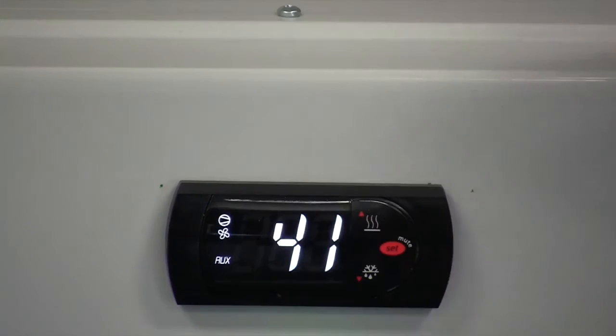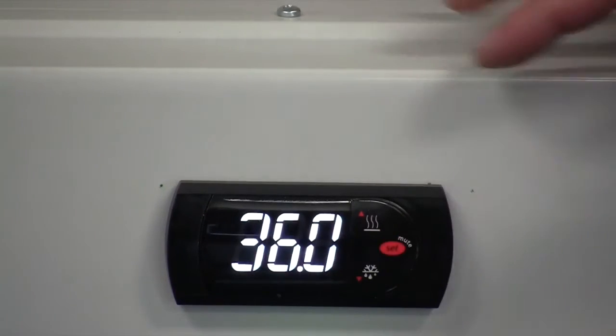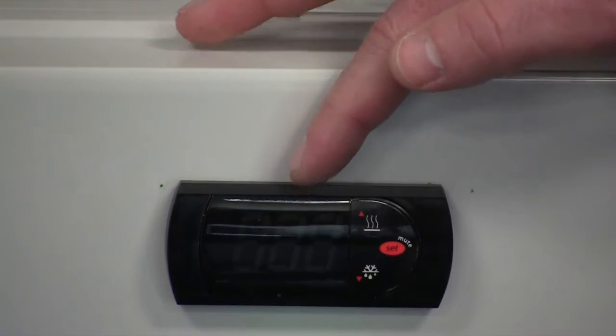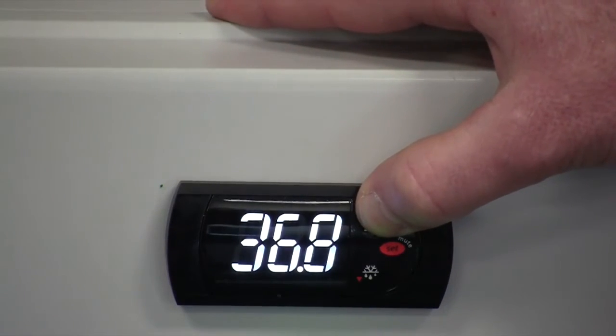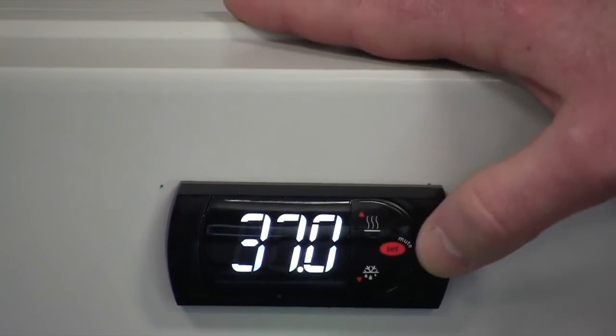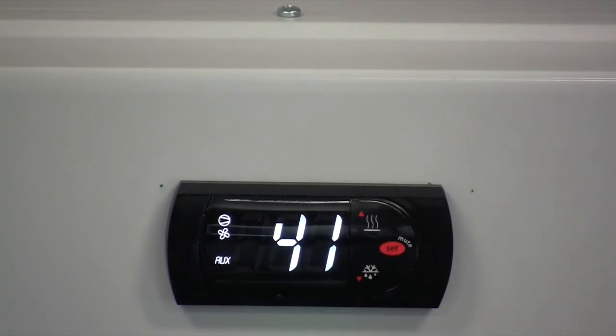To change the set point, press and hold the set button until the current set point is flashing in the display. Press the up or down button to get to the new set point. Press and hold the set key, and the new set point is locked in.